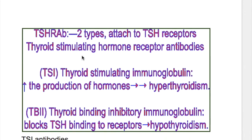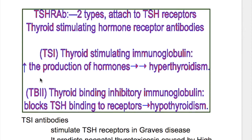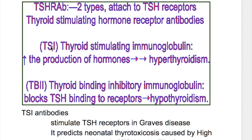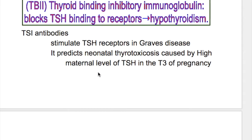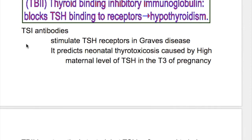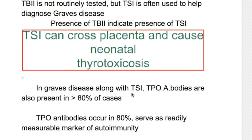There are two types of TSH antibodies: TSI (thyroid stimulating immunoglobulin) and TBII (thyroid binding inhibitory immunoglobulin). TSI increases the function of the thyroid gland, increasing thyroid hormone production, causing hyperthyroidism. TSI is increased in Graves disease, whereas TBII is increased in hypothyroidism. TSI stimulates TSH receptors in Graves disease and predicts neonatal thyrotoxicosis caused by high maternal TSI levels in the third trimester. TSI can cross the placenta and cause neonatal thyrotoxicosis. Other antibodies increased in Graves disease include thyroid peroxidase antibodies.